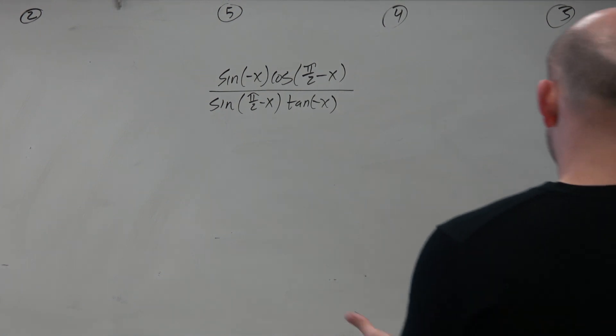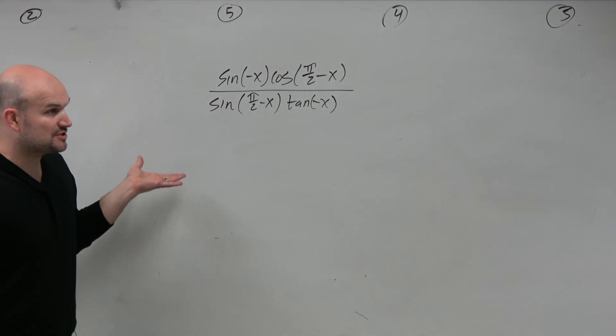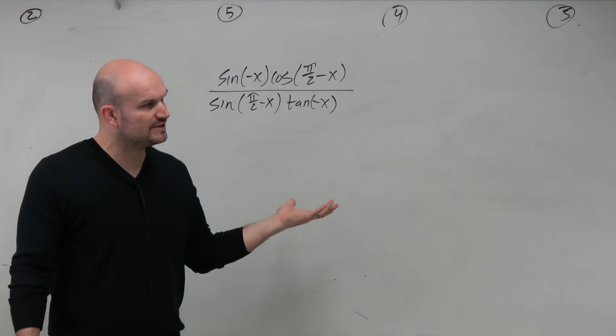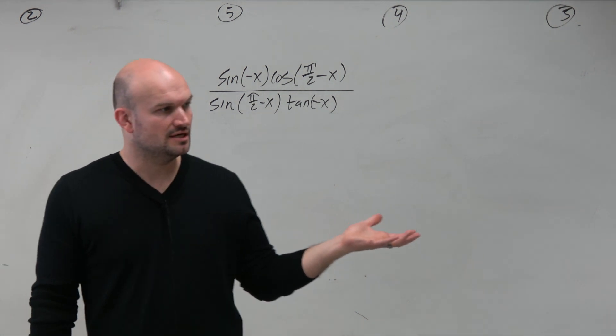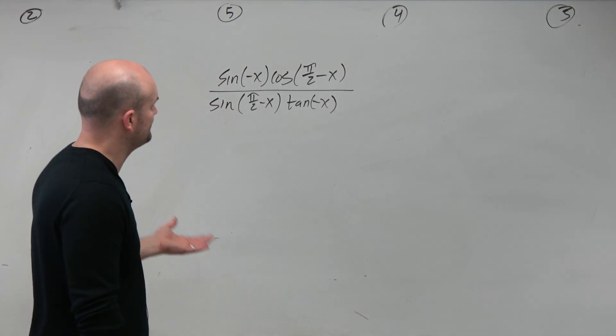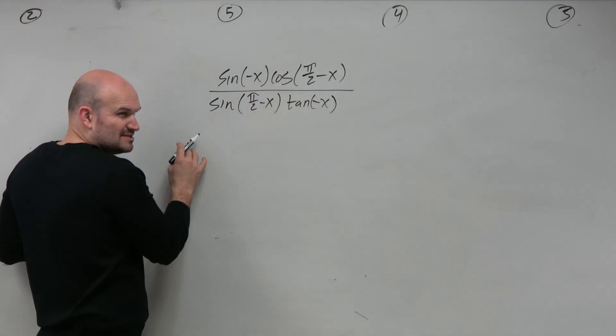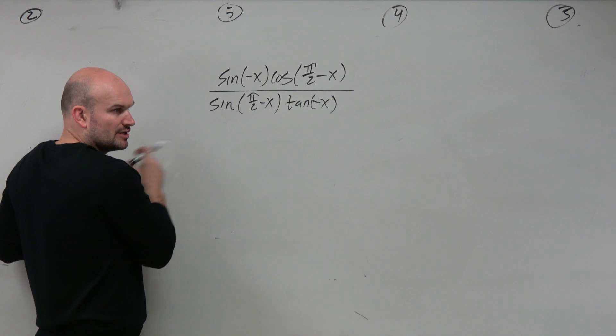So in this case, guys, we have a pretty complicated looking rational expression with these trigonometric functions. But again, we just talked about the even, odd, and co-function identities. So that's basically what we're going to apply here. So first thing first is let's get rid of all this mess. Let's make these nice and simple trigonometric functions.